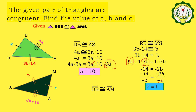And for the variable C, we have segment DR congruent to segment AM. DR is equal to 5 and AM is equal to C. So, C is equal to 5.